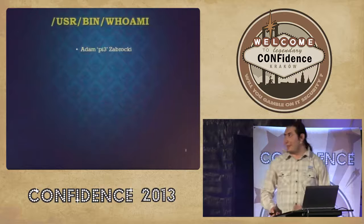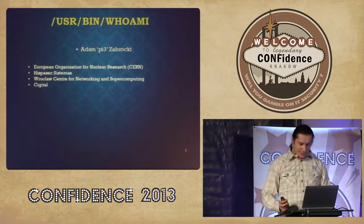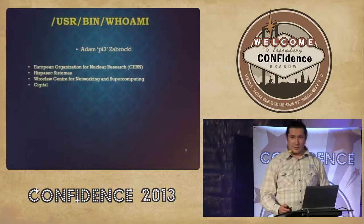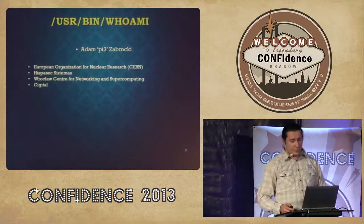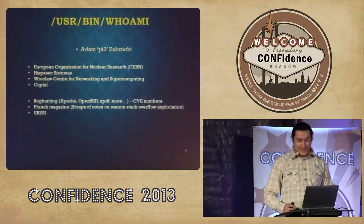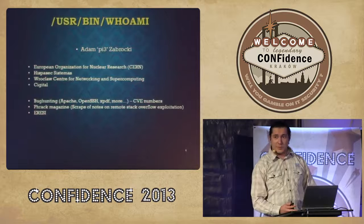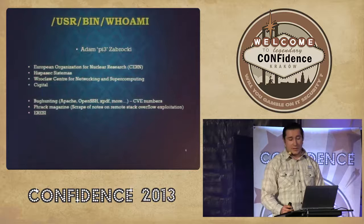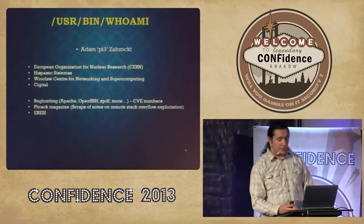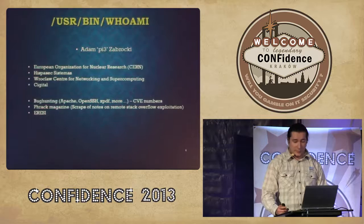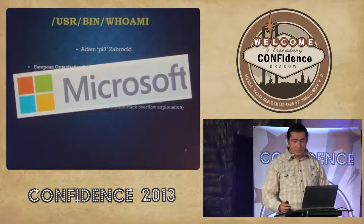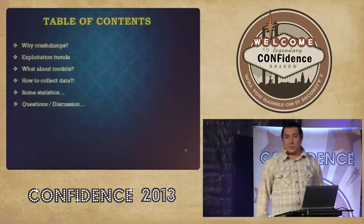Before I go forward, I'd like to say two sentences about myself. My name is Adam Zabrocki, sometimes using the handle p3. Among other things, I worked at CERN, Hispasec — known from VirusTotal — and the Wroclaw Center of Networking and Supercomputing. In my free time I do bug hunting; I found vulnerabilities in OpenSSH, Apache, XPDF, and Adobe Reader, among others, with CVE numbers. I also published research in Phrack about bypassing modern memory safety mitigations, and I was part of the RSE project as a developer for the MIPS infrastructure. Now I'm working at Microsoft — I started with the science team and am now in detection and defense.